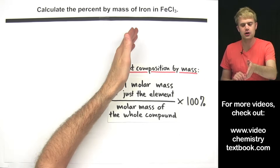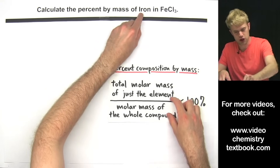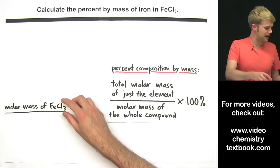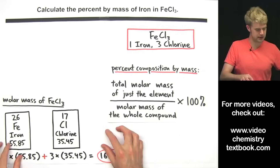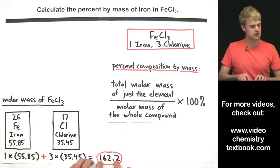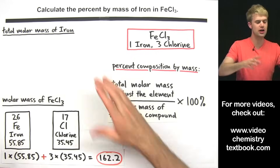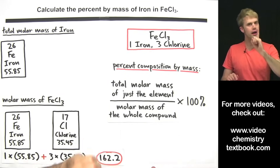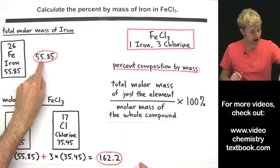Next problem: calculate the percent by mass of iron in FeCl₃. We need the total molar mass of just the iron and the molar mass of the whole compound. Starting with FeCl₃: the formula tells us one iron and three chlorines. We do 1 × molar mass of iron plus 3 × molar mass of chlorine to get the total molar mass of FeCl₃. For just the iron, since there is only one iron atom, the total molar mass is 55.85.